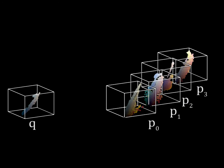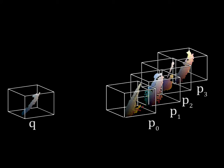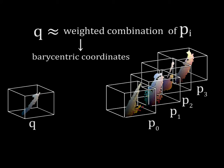Let's denote the input histogram Q and the basis histograms P0, P1, P2, P3. We seek a weighted combination of the basis histograms which best approximate Q. These weights will be our barycentric coordinates.